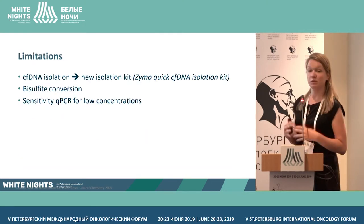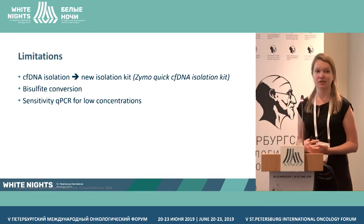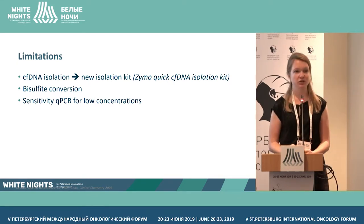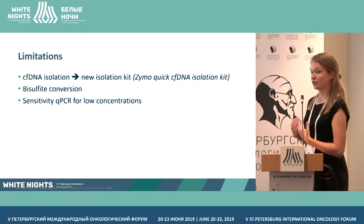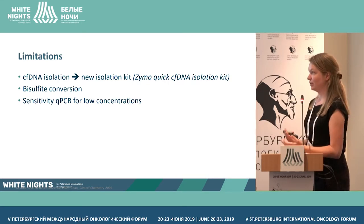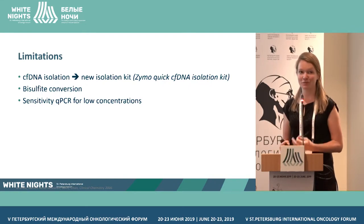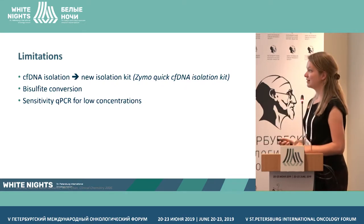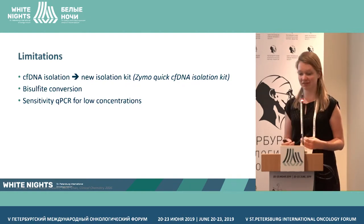We wanted to test this in a larger cohort of patients. But there are some limitations to the study shown. The cell-free DNA isolation was performed with a kit not optimized for cell-free DNA, so we could optimize this. The bisulfite conversion can destroy up to 90–95% of your cell-free DNA, so we want to get rid of that. And the sensitivity of qPCR for low concentrations is also not that great.